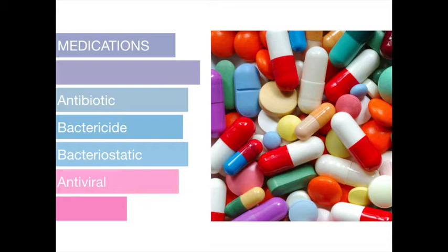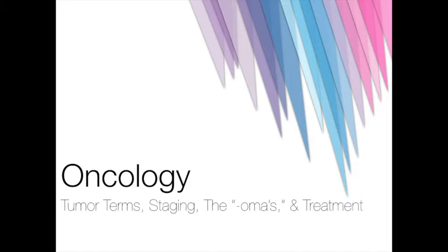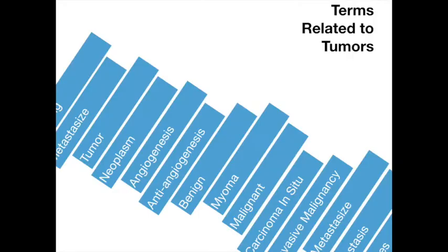Oncology is the study of the prevention, causes, and treatment of tumors and cancer. The term cancer is used to describe over 200 different kinds of malignancies. Cancer attacks all body systems and is the second leading cause of death in the United States. Most cancers are named for the part of the body where the cancer first starts. A tumor, also known as a neoplasm, is a new and abnormal tissue formation. Through a process known as angiogenesis, the tumor supports its growth by creating its own blood supply. Anti-angiogenesis is a form of treatment being developed that will cut off this blood supply. Within a tumor, the multiplication of cells is uncontrolled, more rapid than normal, and progressive.